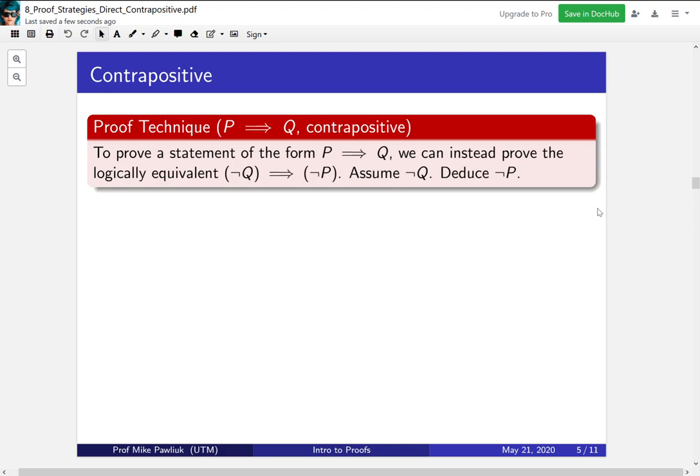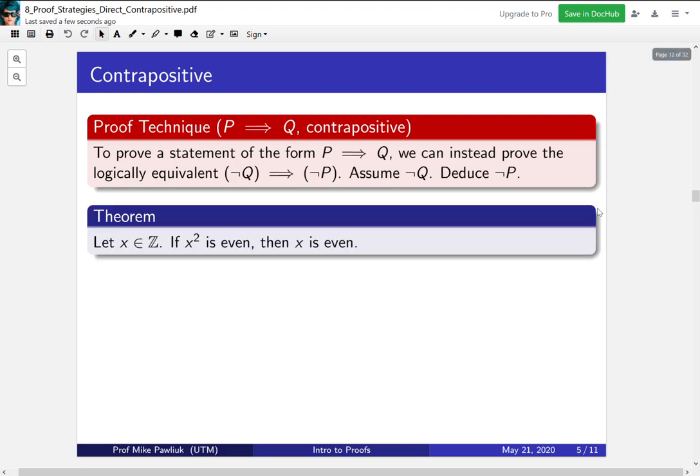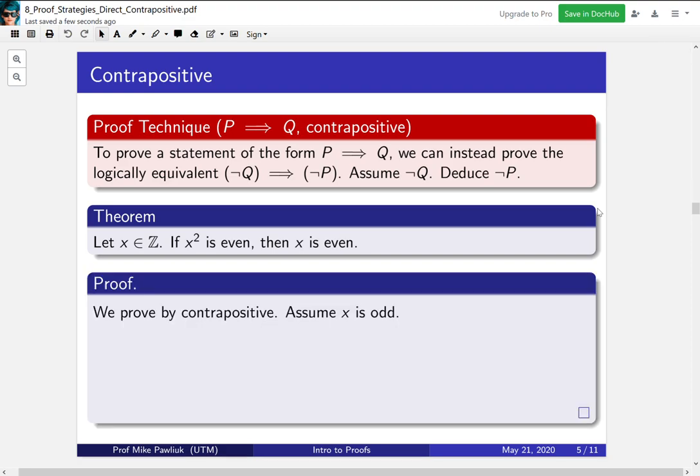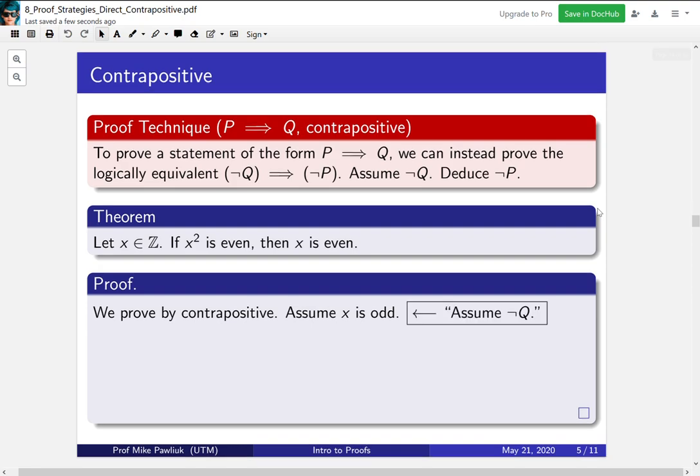Let's see an example of this. So this theorem says if x is an integer and if x squared is even, then x is even. So it's slightly different from the previous one. So we prove this by contrapositive. So we start by assuming not Q. In this case, the conclusion was x is even. So not that is x is odd. This is a little bit of a lie, but we'll fix this in a later video.